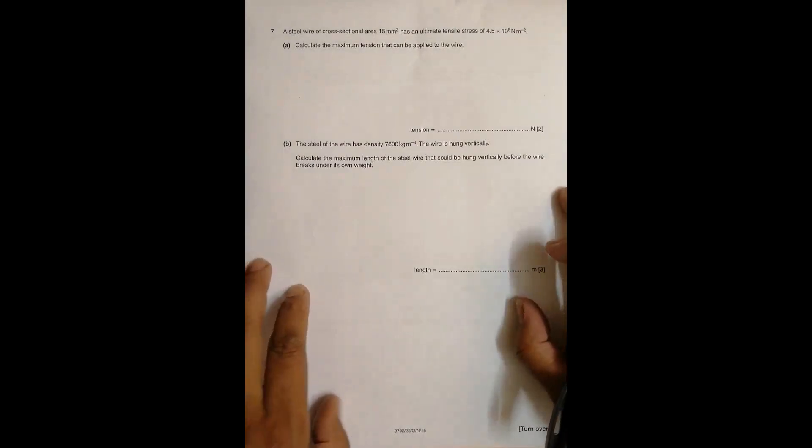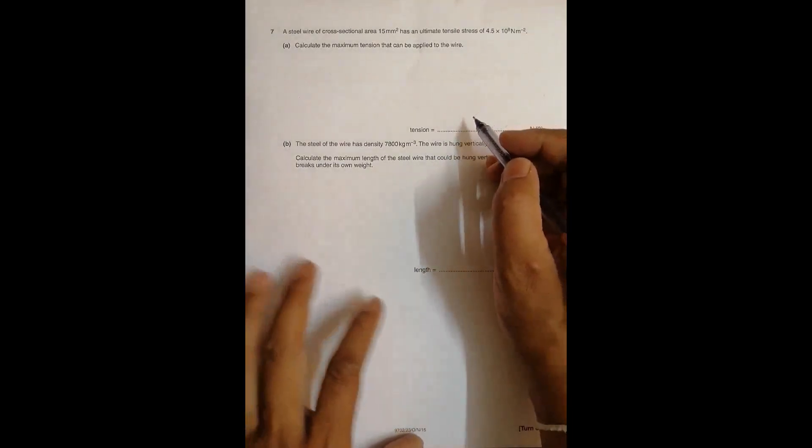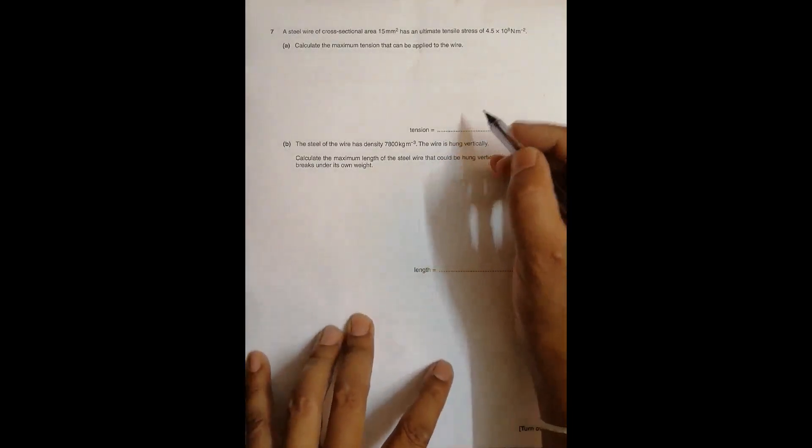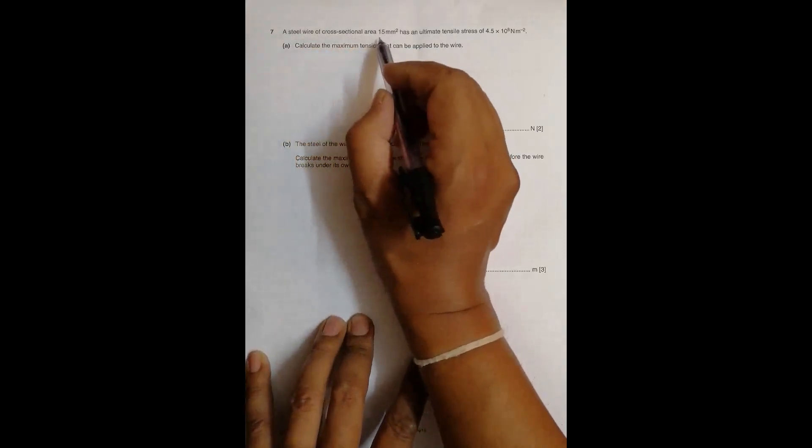Hello folks, this is 2015 October November paper 23, question number 7. It is concerned with the chapter of deformation of solids. It says that a steel wire of cross-sectional area 15 millimeter square.